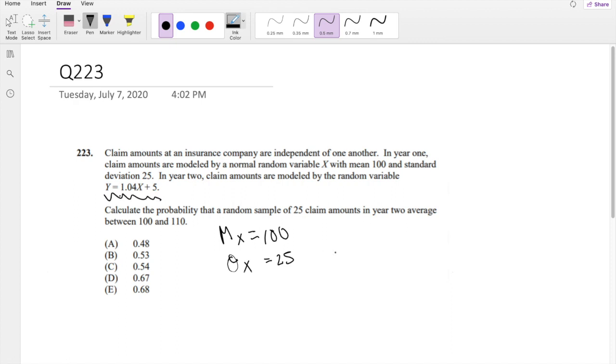Y is given by this formula right here. So the mean of Y is just plugging in that 100 in there, 1.04 times 100 plus 5, which is 109.